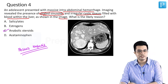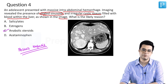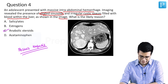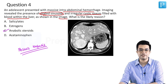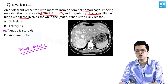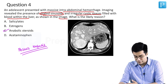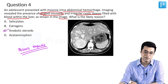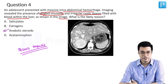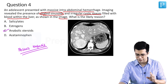Estrogen can be a close answer if it is part of oral contraceptive pills. Usually, estrogen with progesterone combination — combined OCPs — carry a slightly higher risk of developing peliosis hepatis. Whenever the question includes anabolic steroids as an option, the answer will always favor anabolic steroids.